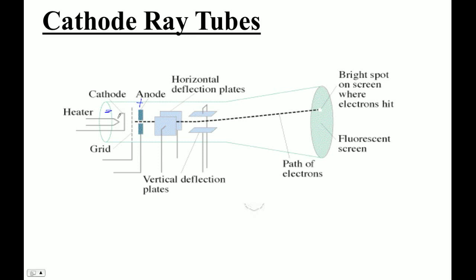And the electrons fly across the space, and some of them fly through this little hole right there, and we accelerate them through some accelerating potential. Typically, this is in the thousands of volts, which is why you don't want to take off the back of an old TV set and just start touching wires, because there's a high voltage in there somewhere.